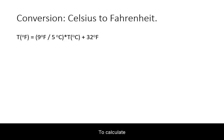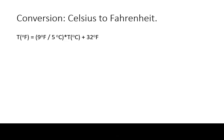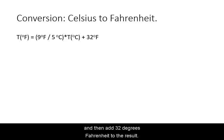To calculate the temperature in Fahrenheit from a temperature in Celsius, first multiply by the scale factor between the two scales — 9 Fahrenheit degrees to 5 Celsius degrees — and then add 32 degrees Fahrenheit to the result.